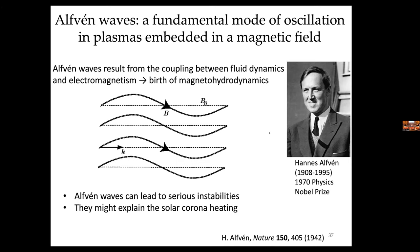Alfvén waves are a possible explanation for coronal heating — waves being emitted and absorbed in the corona as a heating mechanism. Another curiosity: this is the Nobel Prize awarded for the shortest paper — it's one column, half a page only.